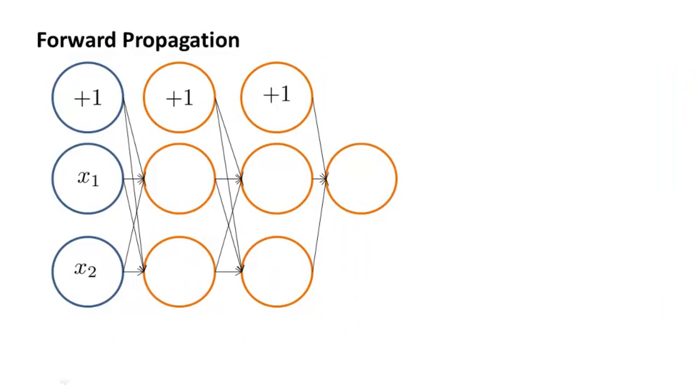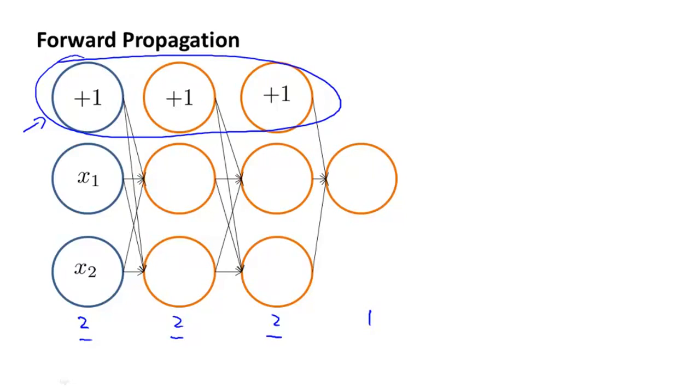In order to better understand backpropagation, let's take another closer look at what forward propagation is doing. Here's a neural network with two input units, that is not counting the bias unit, and two hidden units in this layer, and two hidden units in the next layer, and then finally one output unit. And again, these counts two, two, two are not counting these bias units on top. In order to illustrate forward propagation, I'm going to draw this network a little bit differently. And in particular, I'm going to draw this neural network with the nodes drawn as these very fat ellipses so that I can write text in them.